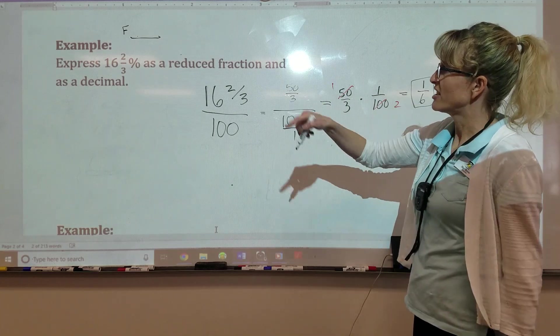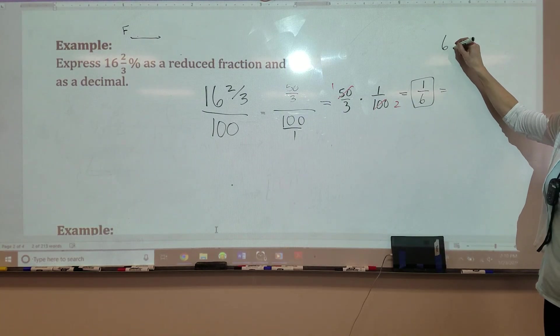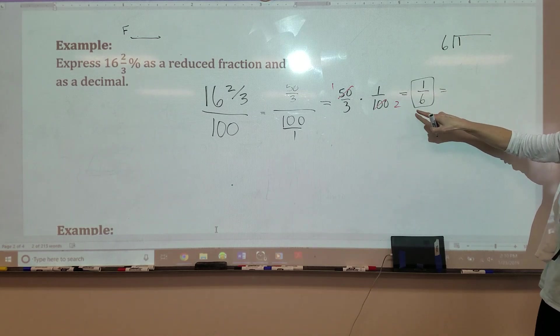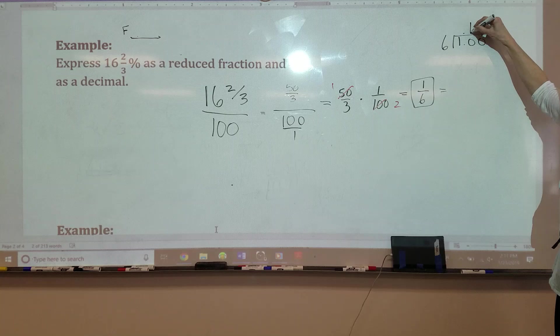Okay. We've got our fraction. Now we need a decimal. How do I turn this into a decimal? I divide. We end it up high. 6 into the numerator. It won't go, so we add on the zeros.